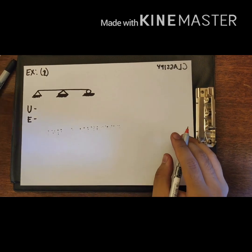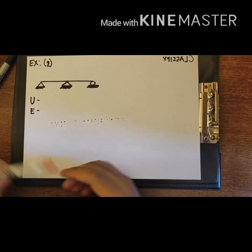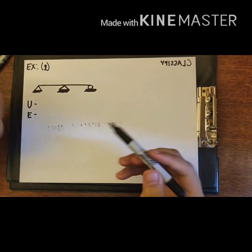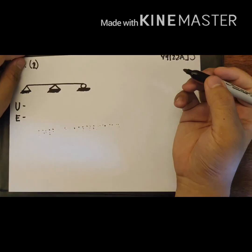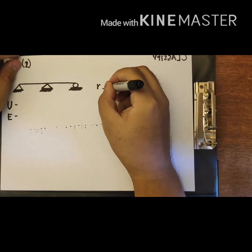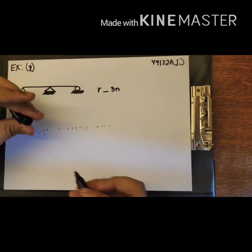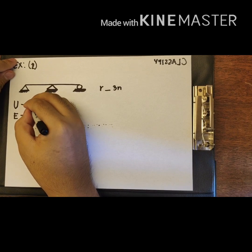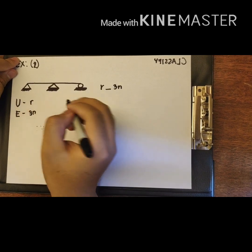For Example 2, we have a continuous beam. We also use the formula R blank 3N. In this formula, R is used as U and 3N is used as E.